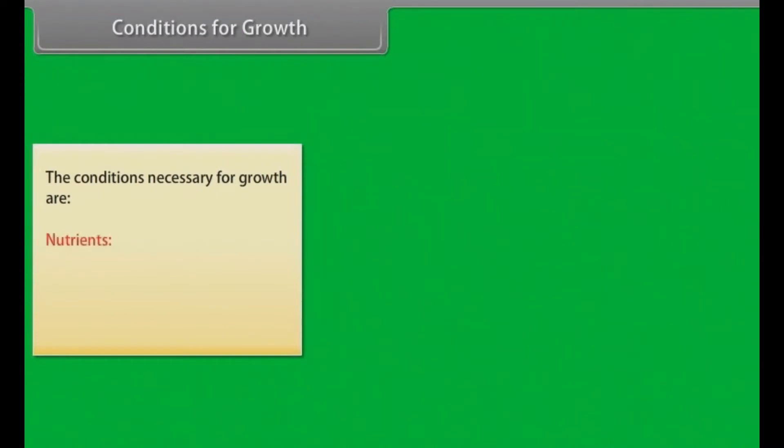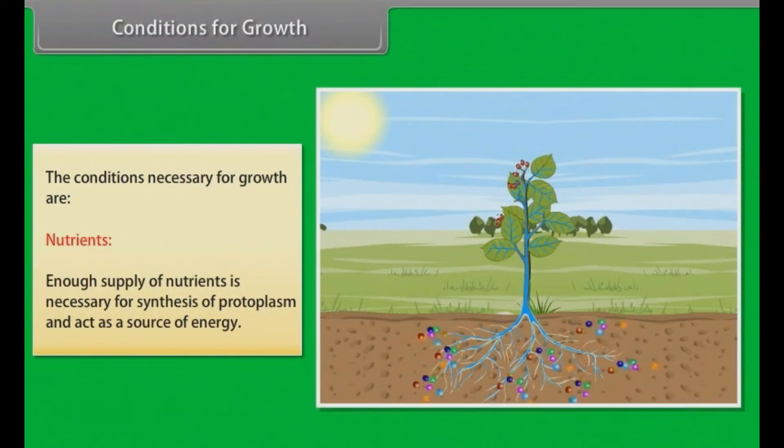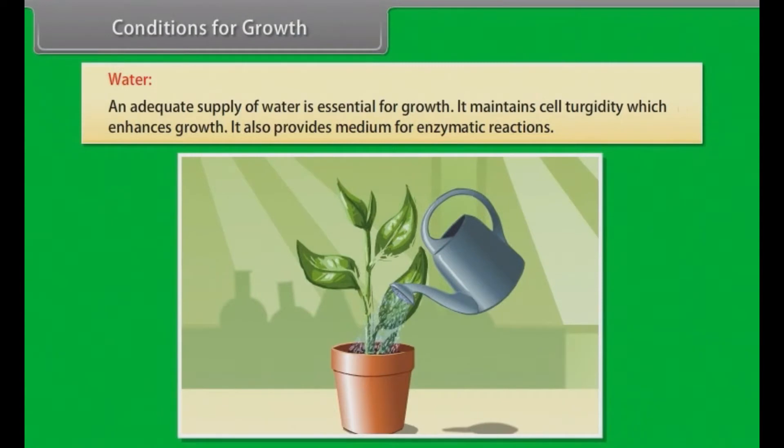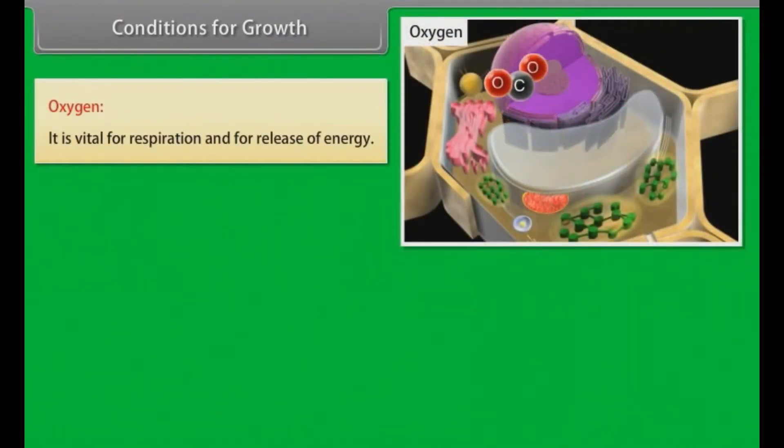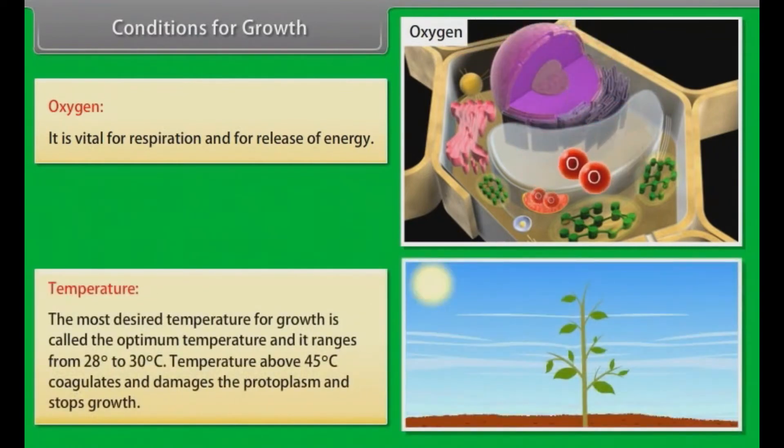Conditions for growth. The conditions necessary for growth are: Nutrients - Enough supply of nutrients is necessary for synthesis of protoplasm and act as a source of energy. Water - An adequate supply of water is essential for growth. It maintains cell turgidity, which enhances growth. It also provides medium for enzymatic reactions. Oxygen - It is vital for respiration and for release of energy. Temperature - The most desired temperature for growth is called the optimum temperature and it ranges from 28 degrees to 30 degrees Celsius. Temperature above 45 degrees Celsius coagulates and damages the protoplasm and stops growth.